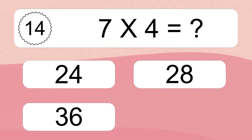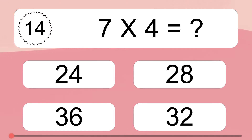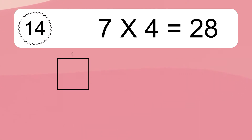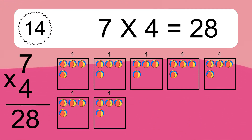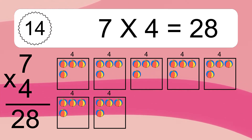7 times 4 equals what? 7 times 4 equals 28. We have 7 boxes, and each box has 4 colorful balls inside. If you count all the balls in all the boxes together, you will have 7 times 4 balls. This equals 28 balls.